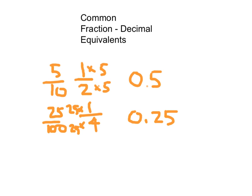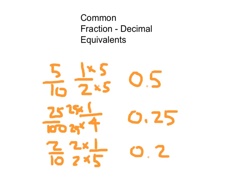A few other ones: we have one fifth, which is just two tenths, so we write it as 0.2. Take a moment to really look at those — I'm going to test you on them in a few. That's one half, one quarter, and one fifth equaling 0.5, 0.25, and 0.2.